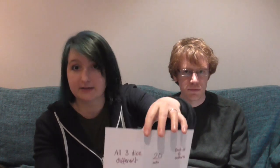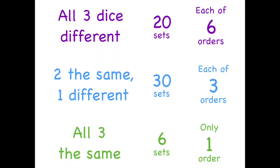If you have three different dice, there are 216 possible combinations — six times six times six — and those fall into different types. You could have all three dice different: there are 20 different ways to do that using numbers one to six, each occurring six times in six different orders. There are 30 sets with two dice the same and one different, each occurring in three orders. And there are six sets with all three dice the same, each occurring in only one order. That gives 56 different sets of numbers in total.